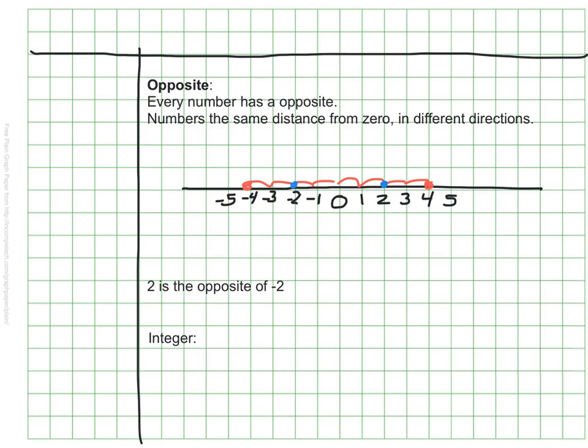Now that we know whole numbers and opposite, we can look at the word integer. All whole numbers and their opposites together are called integers.